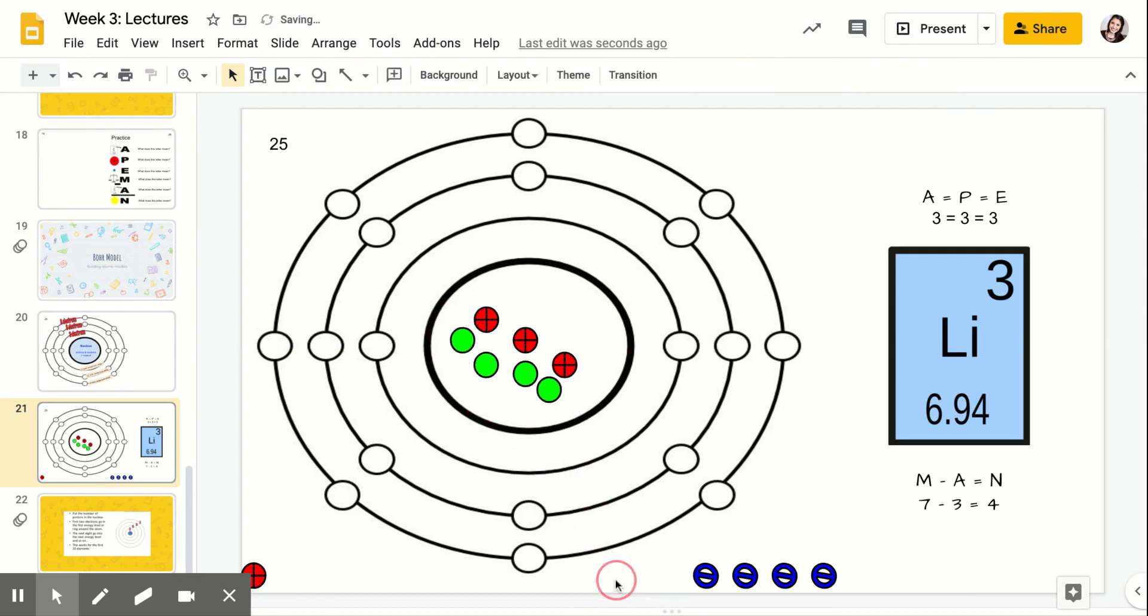And then remember electrons, you start from the inside and work your way out. So electrons, I have three, so I go one, I have one more spot here, two. This shell is full so I'm going to move on to the next one. Three, doesn't matter where you place it, just make sure that your first shell is full. So this is a lithium atom.